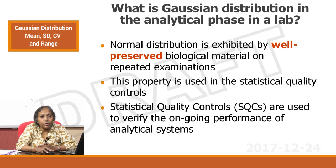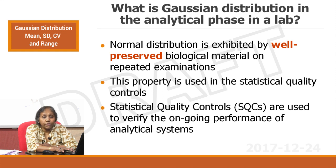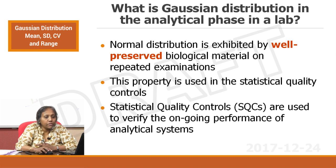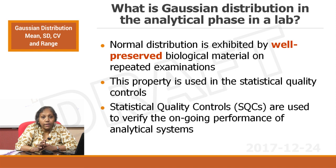Normal distribution is exhibited by well-preserved biological material on repeated examination. This property is used in statistical quality controls. Statistical quality controls, abbreviated as SQC, are used to verify the ongoing performance of an analytical system. Well-preserved biological material, which is QC material, on repeated examination will produce Gaussian curves, and this becomes the key to statistical quality control monitoring.